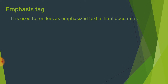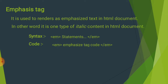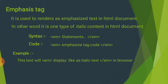Emphasize Text (Em Tag): It renders as emphasized text in an HTML document — nothing but a type of italic font. Italic text को यह display करता है। Syntax: Em Tag, Sentence/Statement, Em Tag close. Code example: Em Tag चालू किया, 'Emphasize text code' लिखा, Em Tag close किया। Example: 'This text will display like as italic text' — Em Tag open किया, Em Tag close किया। Browser में output italic text के रूप में show होगा।